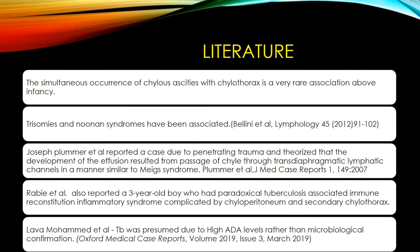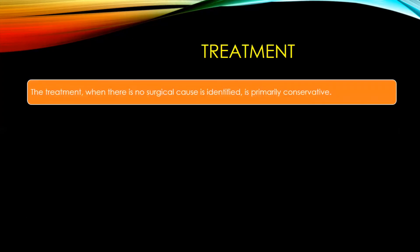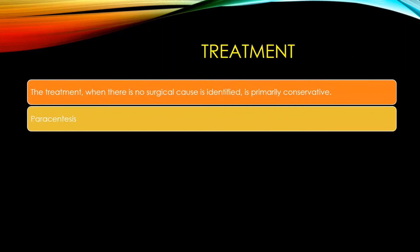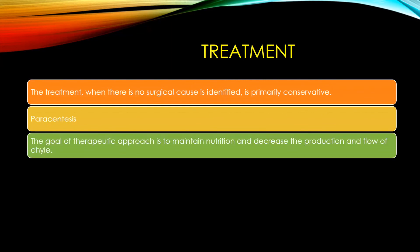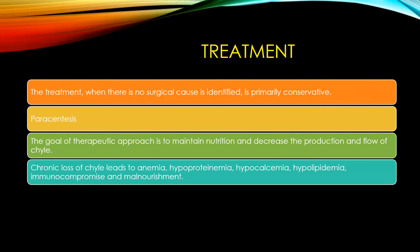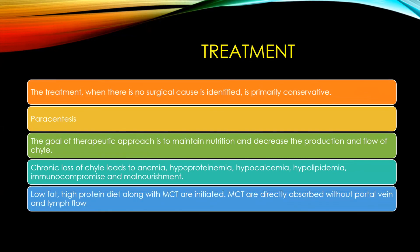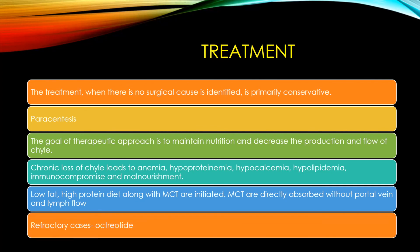Treatment, when there is no surgical cause, is primarily conservative. This includes repeated paracentesis for relieving symptoms. The goal is to maintain nutrition and reduce chyle flow. Chronic loss of chyle leads to anemia, hypoproteinemia, hypolipidemia, and malnourishment. A low fat, high protein diet along with MCT should be initiated, as MCTs are directly absorbed without portal vein and lymph flow. We started this child on an MCT diet, following which her symptoms have gradually reduced. In refractory cases, octreotide can be tried.